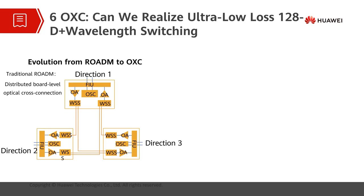In addition, wavelength grooming in different directions also requires fiber connections in different directions. In the early stage, the number of ROADM sites in each direction is small and the number of fiber connections is manageable. In the later stage, the number of internal fiber connections increases exponentially with the increase of dimensions. This makes operations and network management very difficult. OXC can solve this problem of excessive and disordered internal fiber connections.